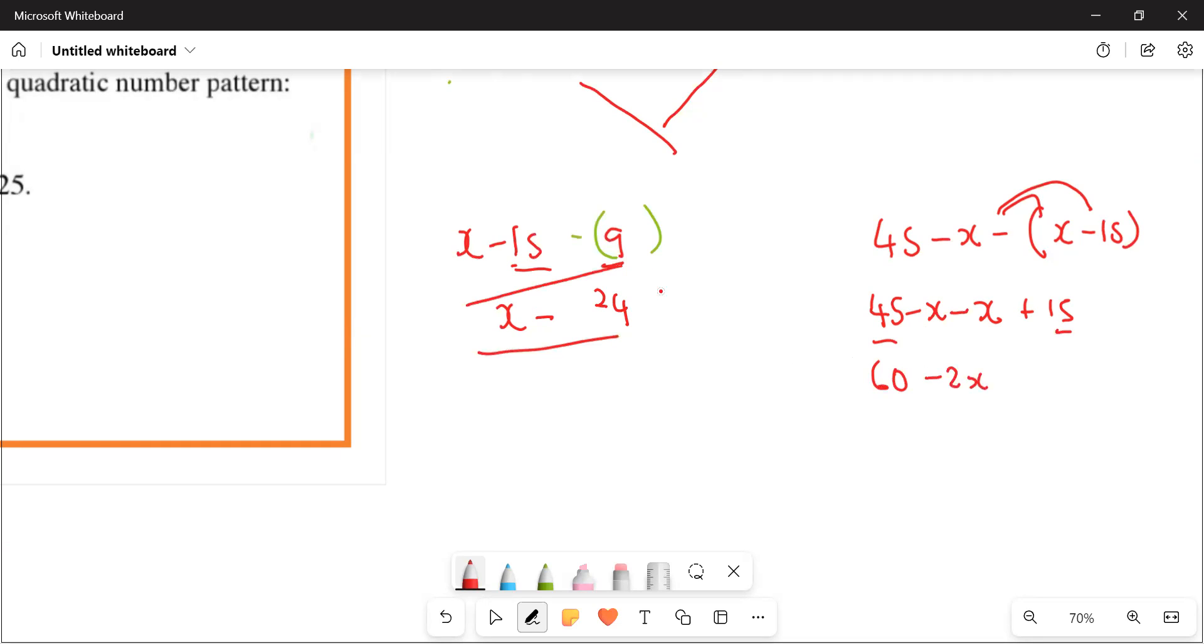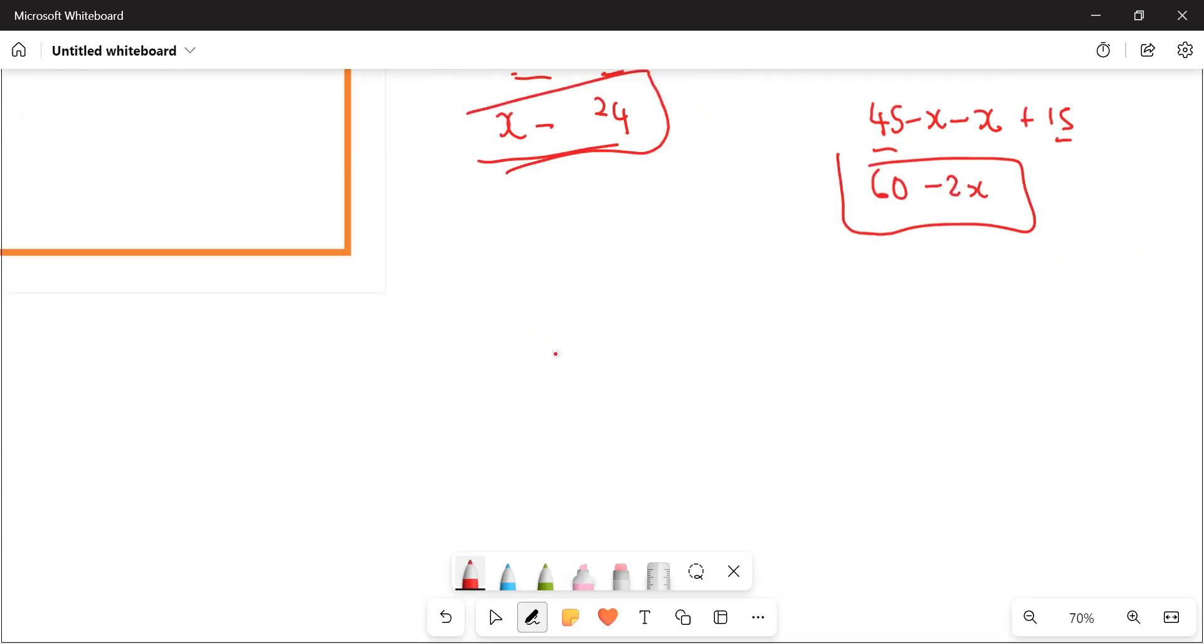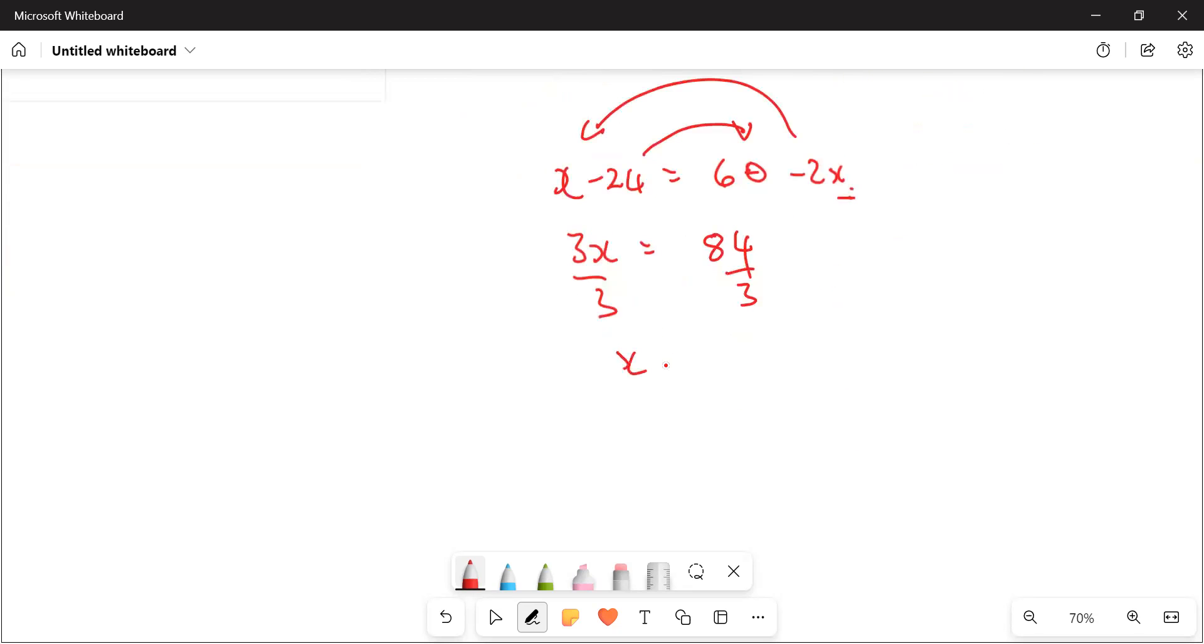Now this is the second difference. If this is the second difference, since this thing is quadratic, I can then say to them safely, x minus 24 is going to be equal to 60 minus 2x. Take this one to this other side. What am I going to have? It's negative. If I take it to this other side, it's going to become positive. So I'm going to have 3x. Take this one to this other side, it's going to be 84. Divide by 3, divide by 3. What is going to be x? x is going to be equal to 28.